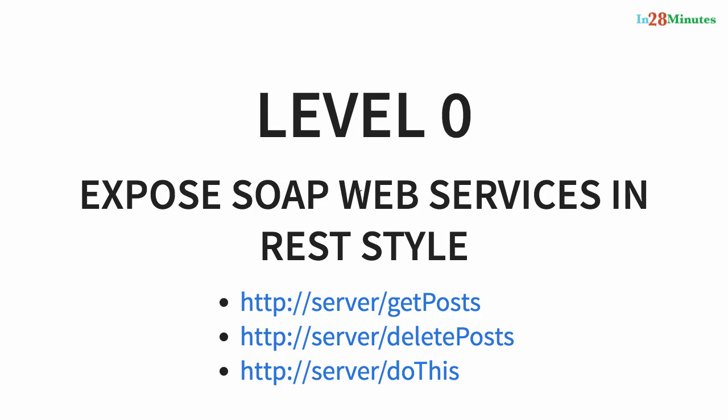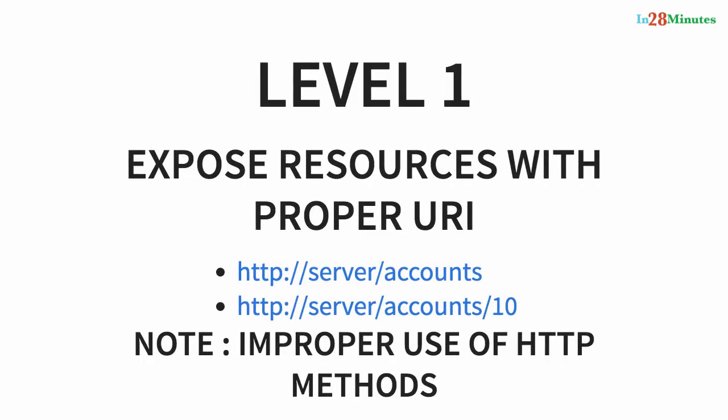Level one is where you start thinking about resources — what are the proper URIs to use. You'd design something like `/accounts` or `/account/10`, but still you're not properly making use of HTTP methods. For example, if you wanted to create a user you're not doing a POST to `/users`. You're not following the HTTP methods properly, but you at least have a proper definition of your resources and know what the URI should be.